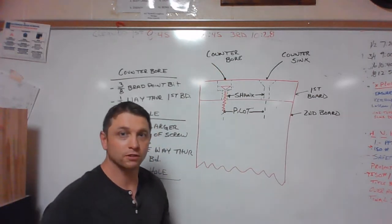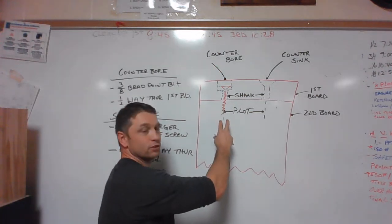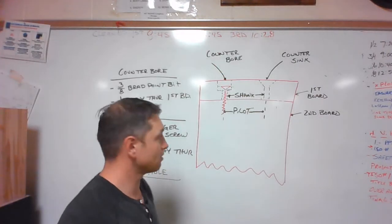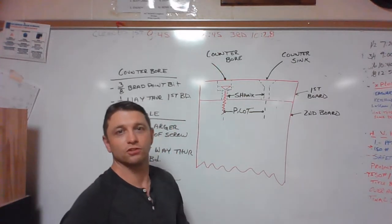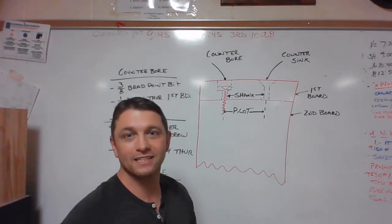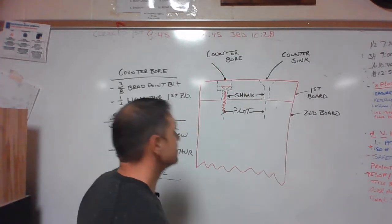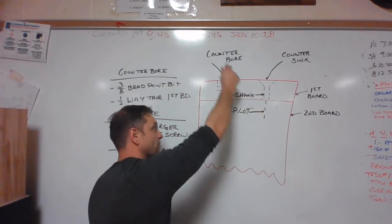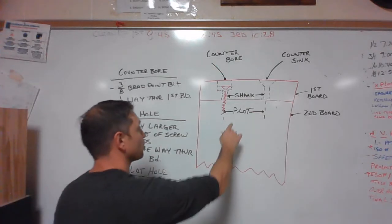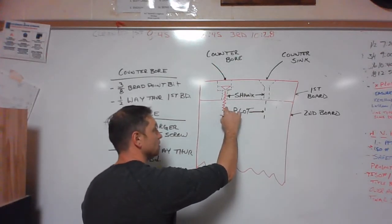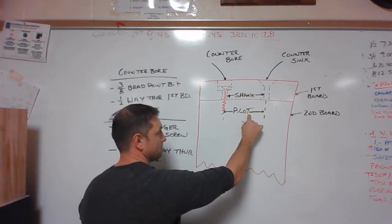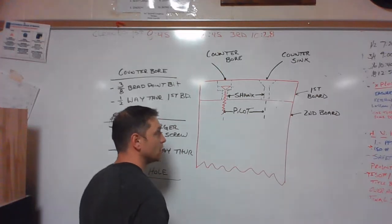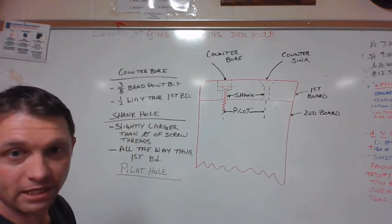Now if you've worked with two by fours or construction grade lumber before, you probably never had to do this because you're working with pine. As we're working with more dense material, furniture grade material that has been dried more than construction grade material, is a higher quality and it's more dense, a stronger wood. It's going to have a tendency to crack or split because it does not have room in it for that screw to be added to it. So the pilot hole is going to guide the screw into the correct location, hence the name pilot, and it's also going to make room or accommodate the screw so that it can be screwed into the material.